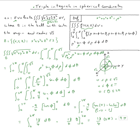So the answer is 9π. Let me verify: 36/4 = 9, yes — nine pi. That's it for this example.